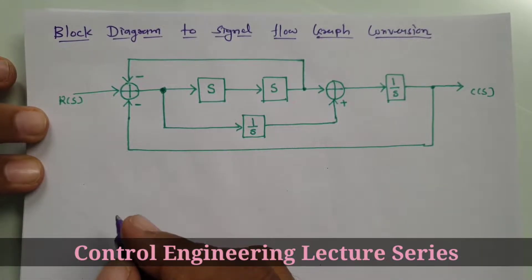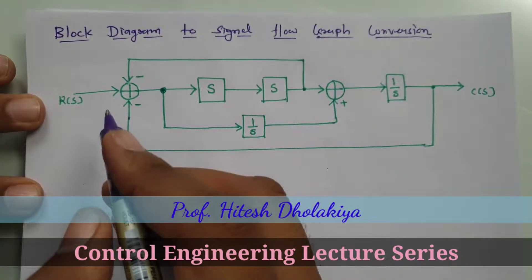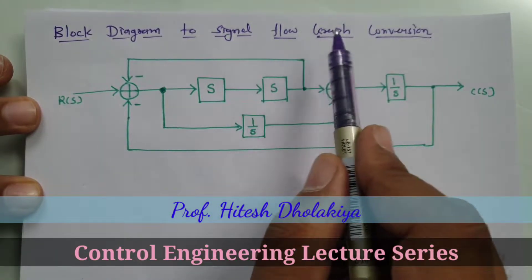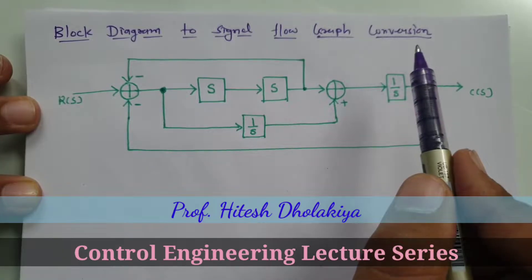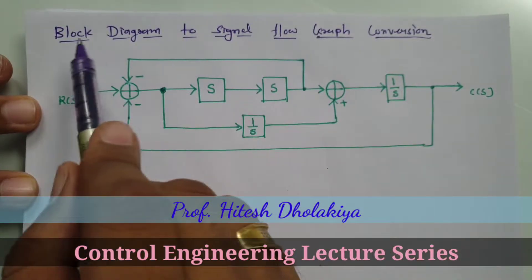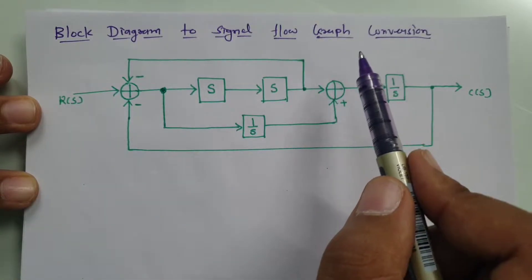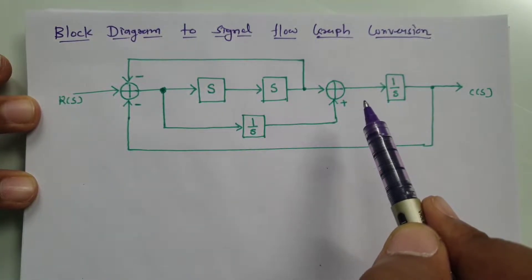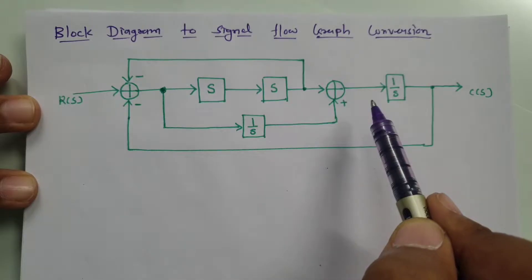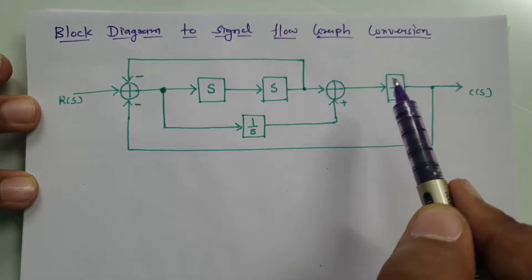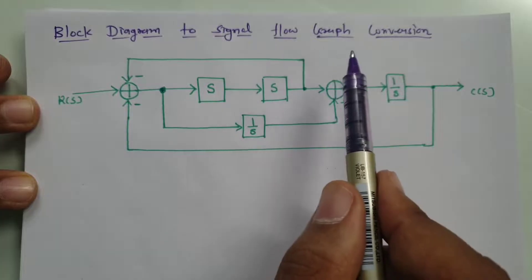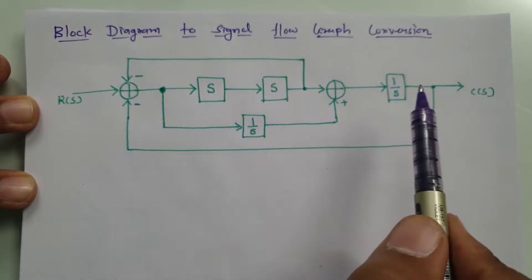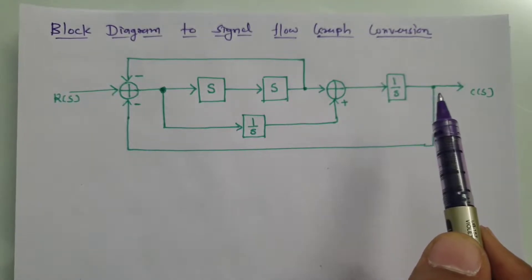Welcome to the control engineering playlist. Professor Itesh Dholakya will explain block diagram to signal flow graph conversion. The reason for this process is that block diagram reduction is quite complex and takes more time to solve problems. If we convert a block diagram into a signal flow graph, it becomes easier to find the transfer function using Mason's gain formula.